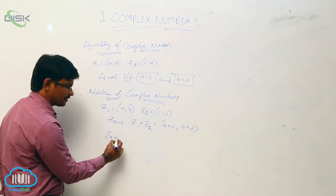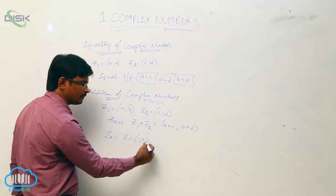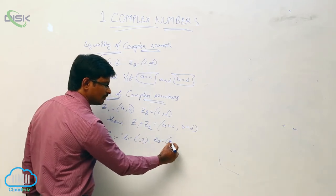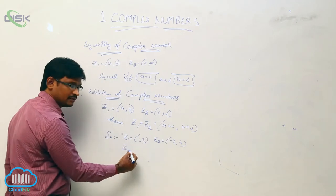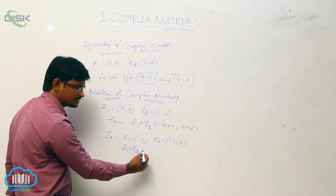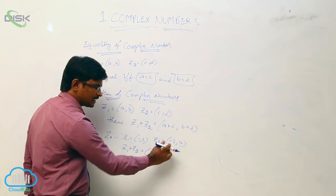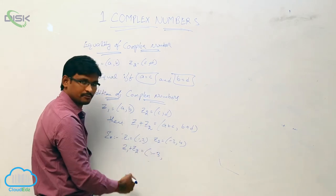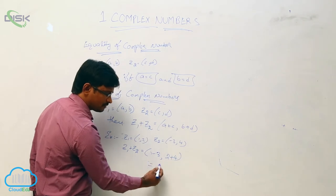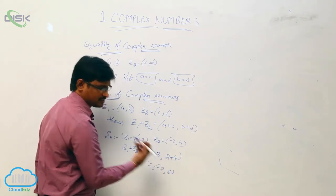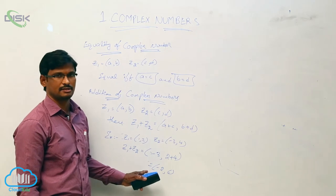For example, consider two complex numbers: Z1 equal to 1 comma 2, and Z2 equal to minus 3 comma 4. Then the addition Z1 plus Z2 — the corresponding elements are 1 and minus 3, and 2 and 4. So the value is minus 2 comma 6. This is the addition of the two complex numbers.